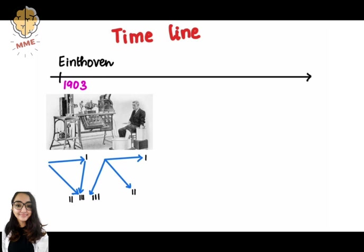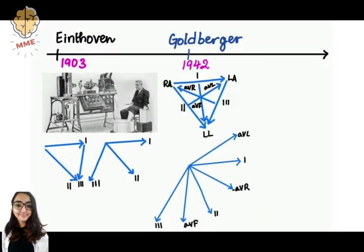That is lead I, the right arm and left leg that is lead II, and the left arm and left leg that is lead III. The three limb electrodes I, II, and III form a triangle known as Einthoven's equilateral triangle at the right arm, left arm, and the left leg.